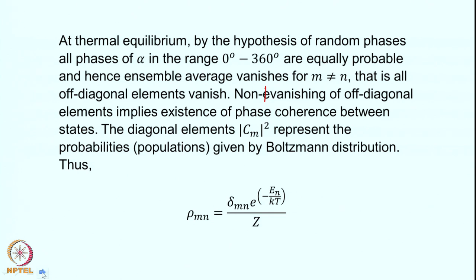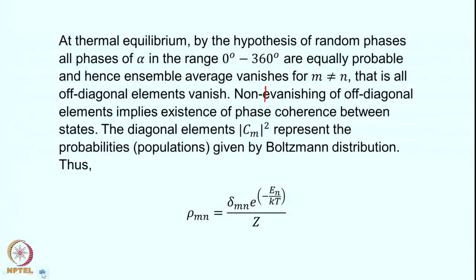The probability tells us the population of the individual state. The probability that the spin is in a particular eigenstate is essentially the population, given by the Boltzmann distribution. Therefore, ρ_mn = δ_mn · e^(-E_n/kT) / Z, where δ_mn is the Kronecker delta: zero for m ≠ n and one for m = n.